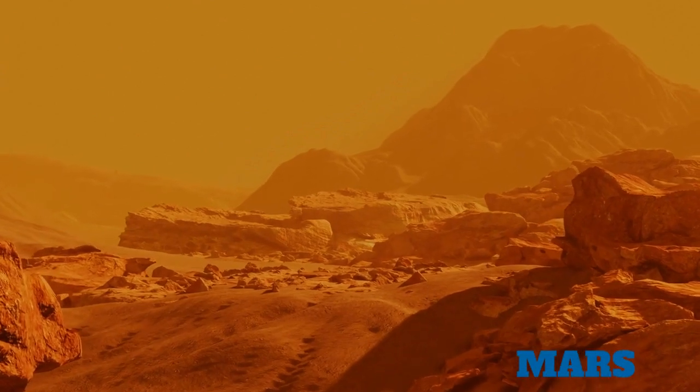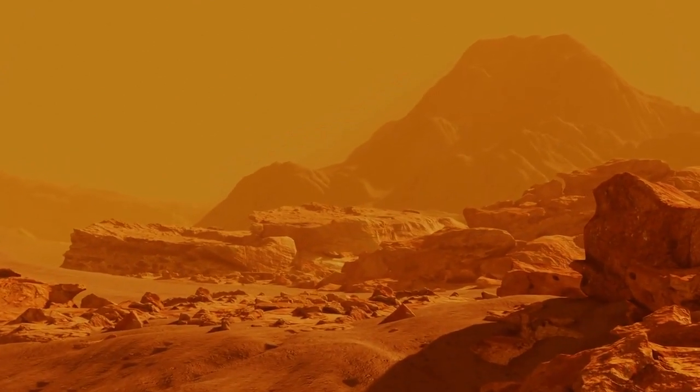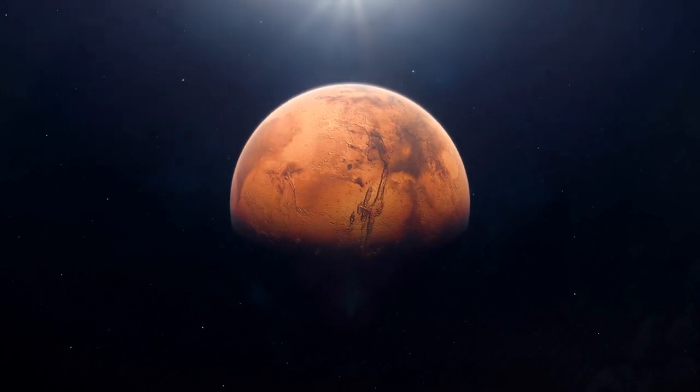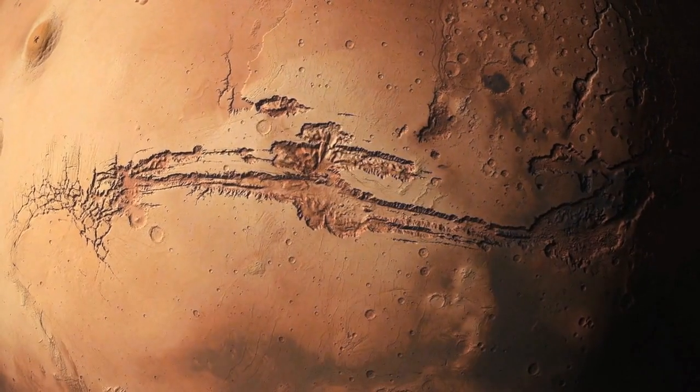Mars, the red planet, gets its color from iron in its soil that has turned to rust. Mars has two moons and may have sustained life about 3.7 billion years ago.